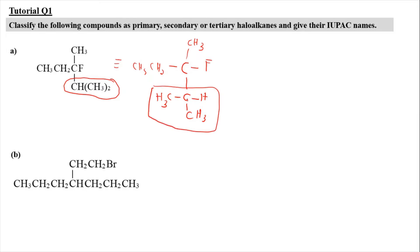Now we're going to classify the carbon of the haloalkane — whether it's tertiary, primary or secondary. We're going to look into the carbon that is attached to the halogen, which is this carbon here. This carbon here is attaching with one, two, and three alkyl groups. And hence, we can say that this carbon here is a tertiary haloalkane.